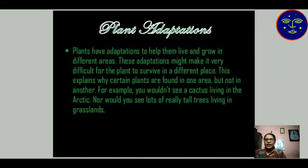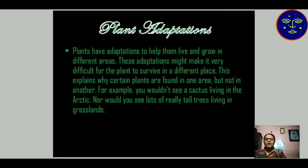Plant adaptation: plants have adaptations to help them live and grow in different areas. These adaptations might make it very difficult for the plant to survive in a different place. If we take one plant and place it in another area or surrounding, it is difficult for the plant to grow. Adaptation is required to adjust the plant within its surroundings. This explains why certain plants are found in one area but not another. For example, you would not see a cactus in the Arctic region. Cactus is only seen in the desert because the sandy soil is there, and cactus is adapted to that sandy soil.